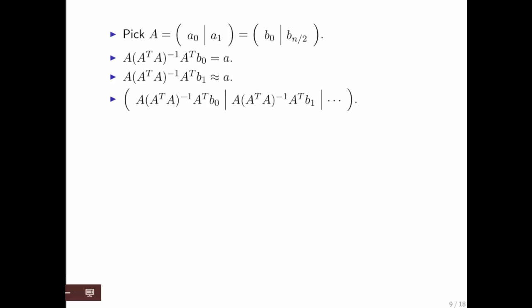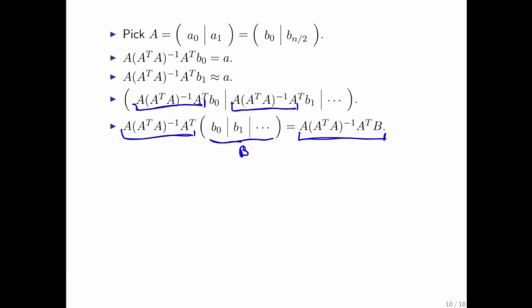We can do that for every column of B. And again, we can recognize that this is just the same matrix multiplying each of the individual columns of the picture, and therefore we can pull that out. And then we can reconstruct this to matrix B. And we get this expression right here.